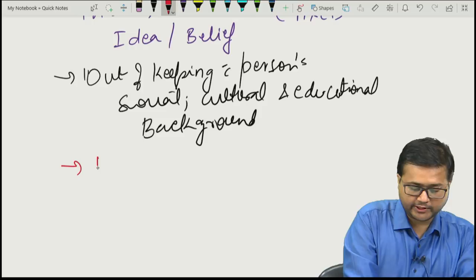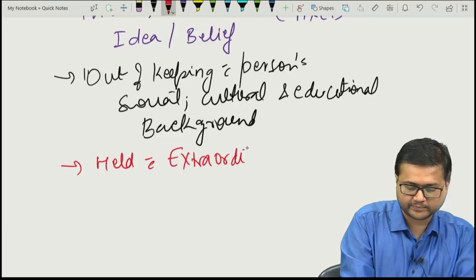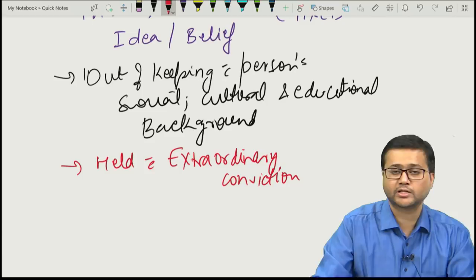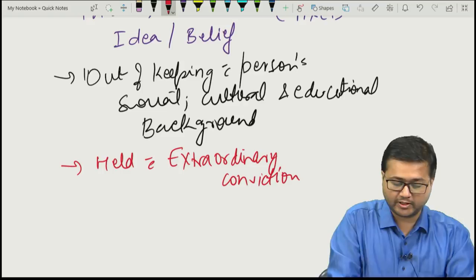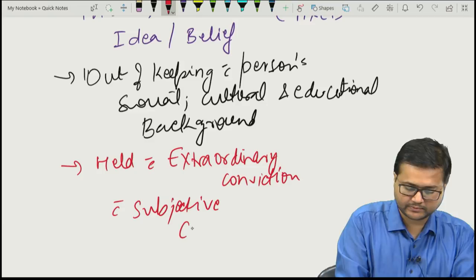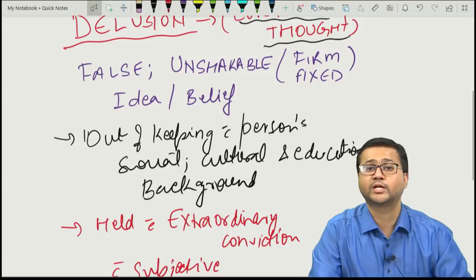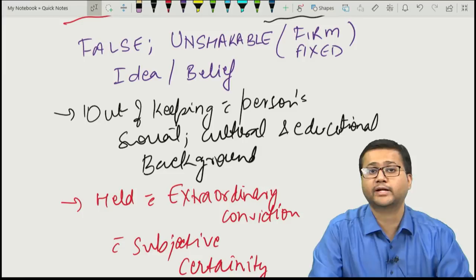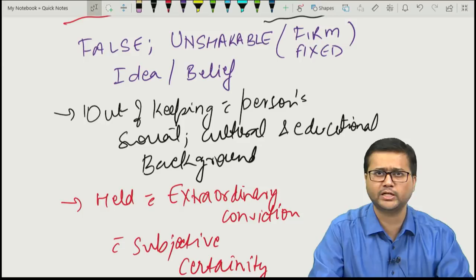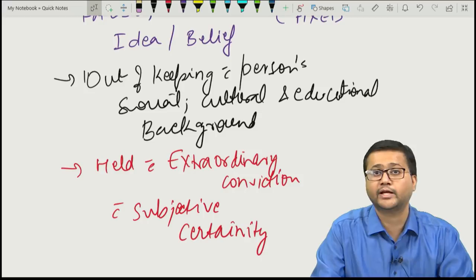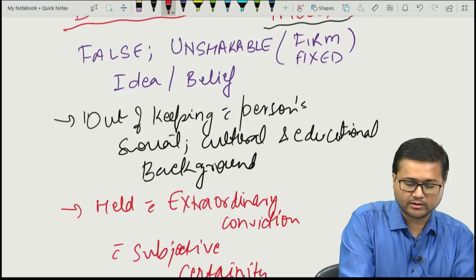A delusion should be held with extraordinary conviction and subjective certainty. For example, if a person believes their neighbors are trying to harm them — although others try to convince him otherwise with no supporting evidence — the person still insists the neighbors are trying to harm him. He is extraordinarily convinced and has subjective certainty.